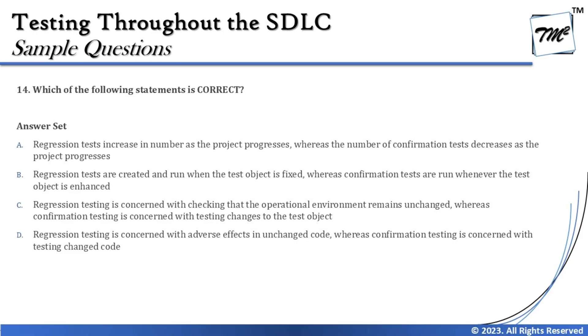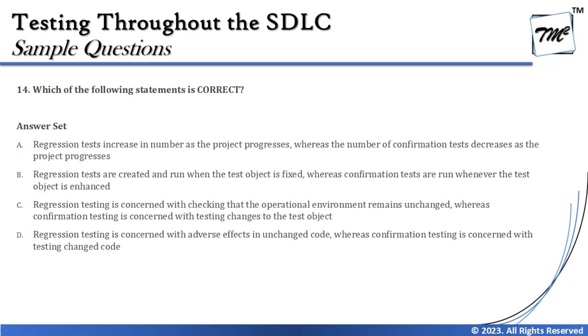Question 14 asks which statement about regression and confirmation testing is correct. Option A says regression tests increase in number as the product progresses, whereas confirmation tests decrease. The first part is fine — regression testing grows as the project evolves. However, confirmation testing does not simply reduce; it depends on the number of defects found. There is no inverse relationship between them.